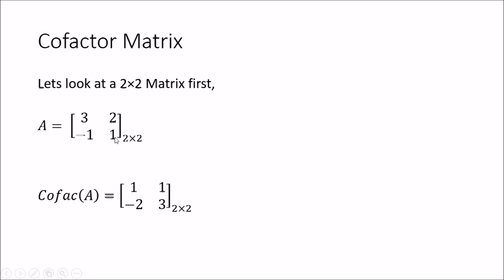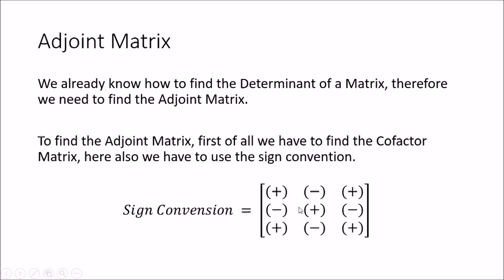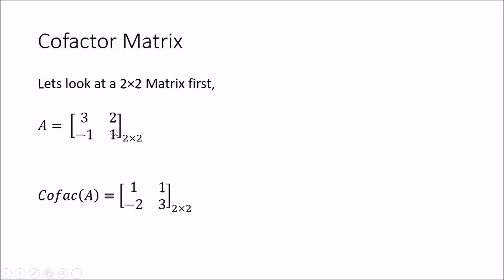Then we look at the 1,2 element. We remove the row and column which contains the 1,2 element and we are left with minus 1, but according to the sign convention this location is negative, so negative times negative becomes positive 1. Coming to the 2,1 position, remove the row and column and we are left with 2, which becomes minus 2 due to the sign convention. For the 2,2 location, remove the row and column and we are left with 3. So this is the cofactor matrix of this 2 by 2 matrix.